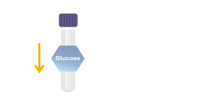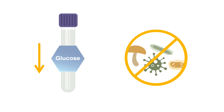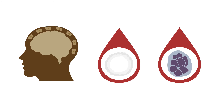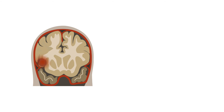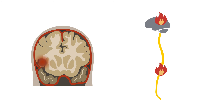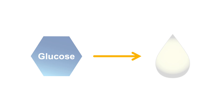Low CSF glucose concentrations can also occur in non-infectious conditions, including patients with leptomeningeal carcinomatosis, leukemia, central nervous system lymphoma, severe subarachnoid hemorrhages, or neurosarcoidosis. These patients may have cellular or inflammatory infiltrates that disrupt the active transport of glucose into the cerebrospinal fluid.